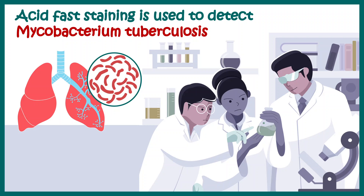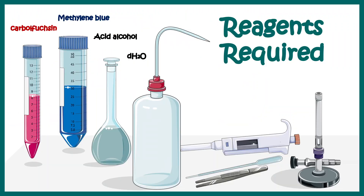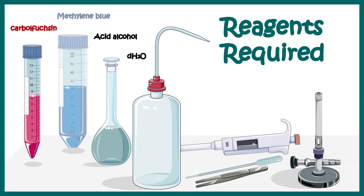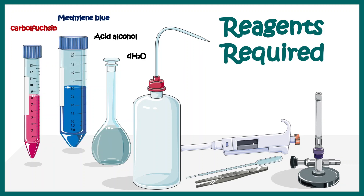Let's hit the virtual lab and try to do an acid-fast staining. First of all, let's get introduced to the reagents. We need carbol fuchsin as the primary stain, then methylene blue as the counter stain. There would be acid alcohol as the decolorizing agent, distilled water for washing purposes, and some other reagents like pipette and forceps — all of these things very common to any microbiology lab.